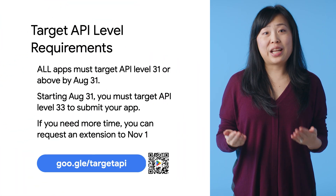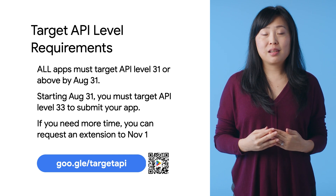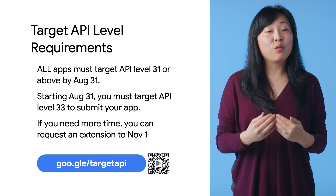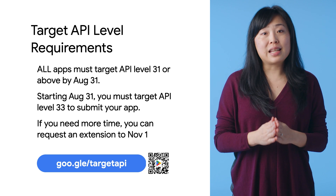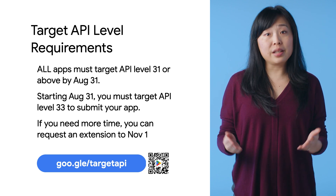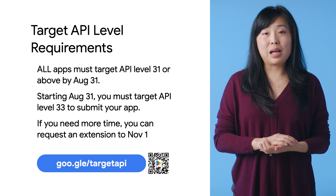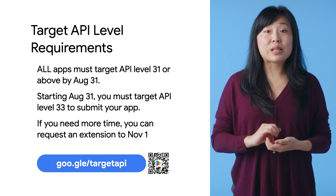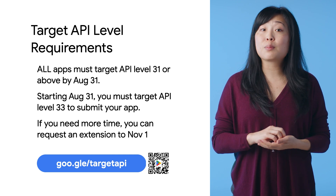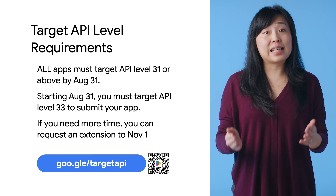Let's quickly touch on an updated deadline for target API-level requirements. To help simplify deadlines and avoid confusion, we're unifying the deadline to August 31st every year for all apps. This means that new apps, existing apps, and app updates all need to target recent API levels in order to be submitted for review and stay distributed to all users on Google Play. If you need more time to update your app, you will be able to request an extension to November 1st, 2023. Please see more details at our Help Center article.